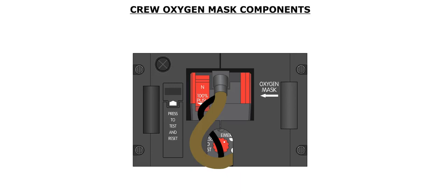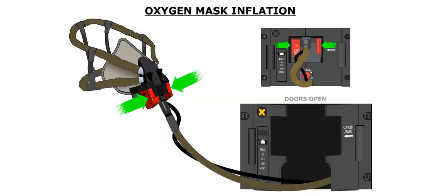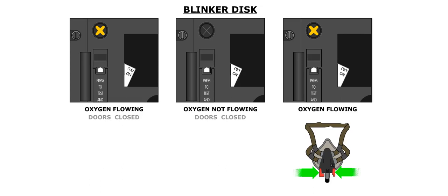The crew oxygen mask consists of two red release tabs, a yellow cross indicator, an N/100% rocker switch, and a reset test push button. Squeezing the two red tabs unlocks the stowage doors and supplies pressurized oxygen to inflate the mask harness. An indicator displays a yellow cross when oxygen is flowing. If the indicator is black, it means that oxygen is not flowing. The indicator will momentarily display a yellow cross when the two red tabs are squeezed together.